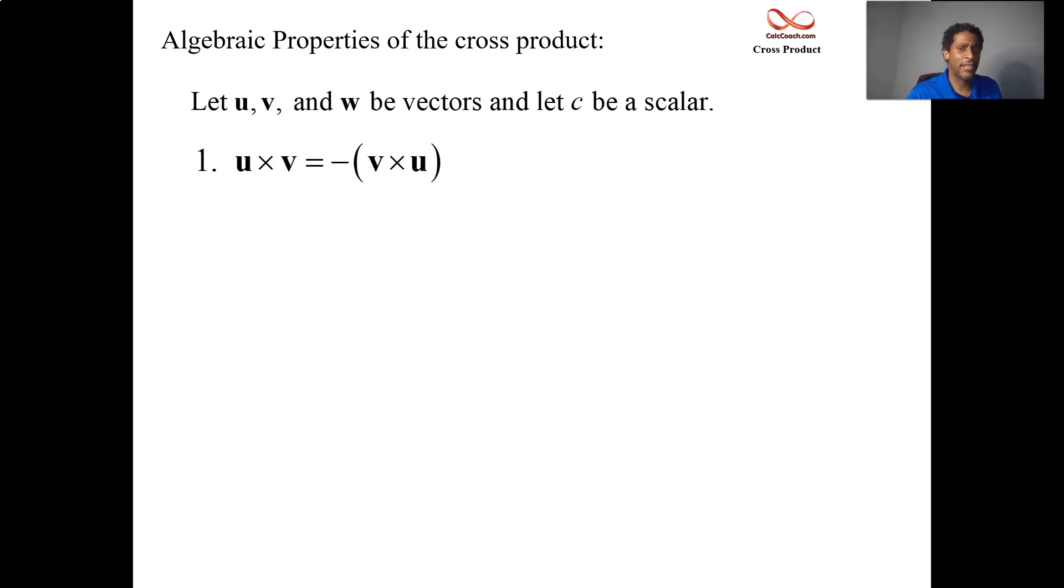Second property, distribution. Say you want to add two vectors first and then cross with the third vector. That's what's on the left-hand side. On the right-hand side is the fact that you're crossing first and then adding afterwards. Distributing the cross product over the vector sum.